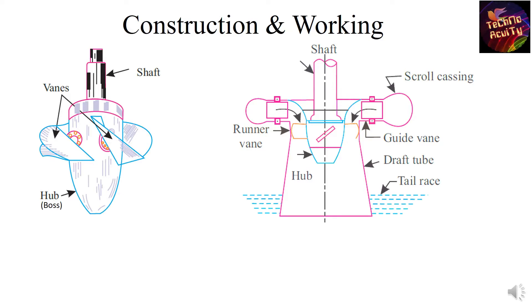The main component of the Kaplan turbine is hub on which runner vanes are mounted as shown in diagram. The water is coming from the scroll casing through guide vanes and passing over the runner vanes and runner vanes starts rotating. The shaft is connected to the hub and further it is connected to the generator for the electricity generation.